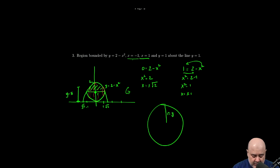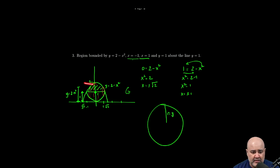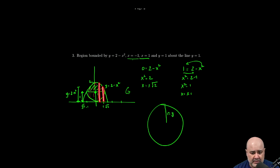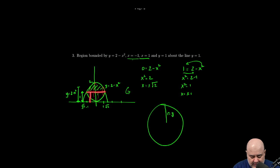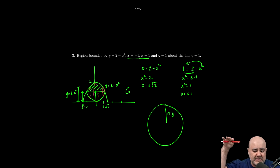What often gets mistaken is that students think the radius is the distance from the x-axis to the top of the function — but that really isn't the case. The radius is just the distance from the axis of revolution, y equals 1, to the top of the function. We know this distance is given by y equals 2 minus x squared, and the distance from the x-axis to y = 1 is always just 1 — that distance never changes regardless of which point we pick.